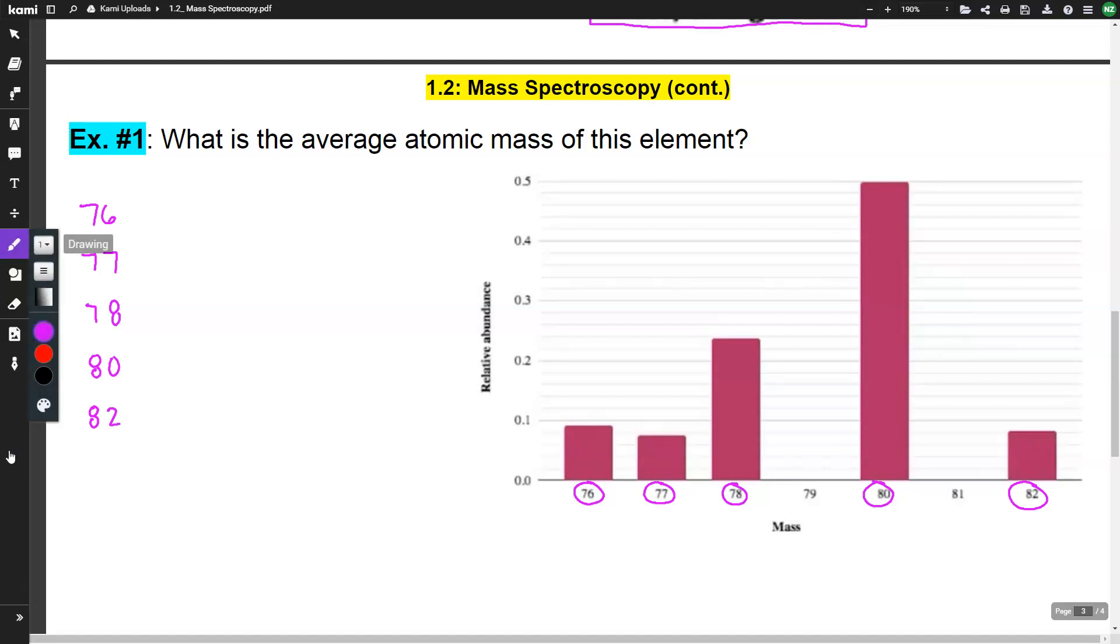Now we're going to have to use a little bit of estimation here. So we want to follow the top over to our y-axis and kind of estimate where we end up. Some of these are going to be a little bit easier than others. Some of them might be a little trickier, especially if I'm looking at the bottom three, they're all pretty close. So let's go ahead and take a look here. So 76, if we look at 76, 76 is less than 0.1. So let's say maybe like 0.096. So we're going to multiply the mass by the abundance.